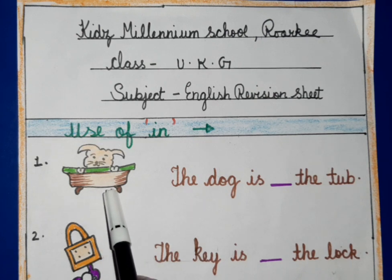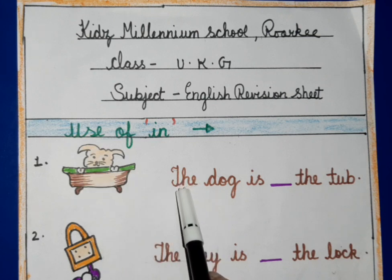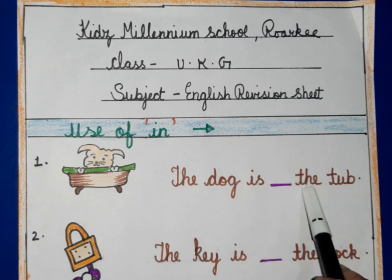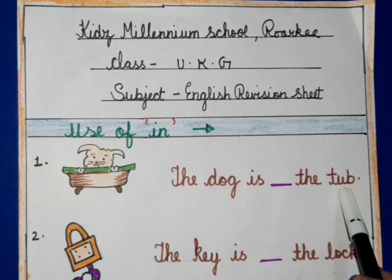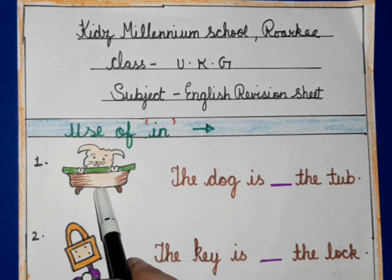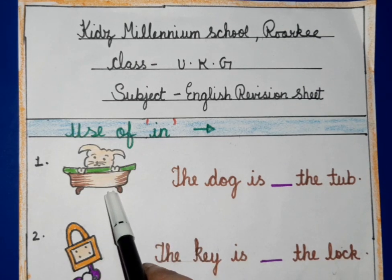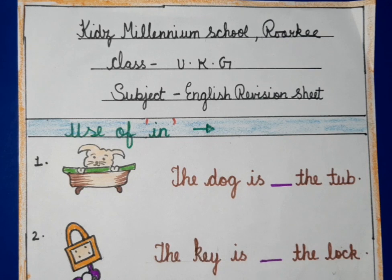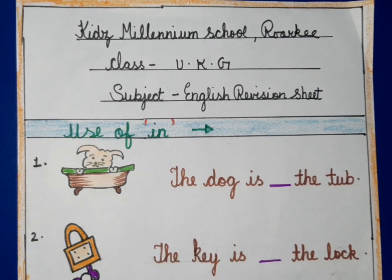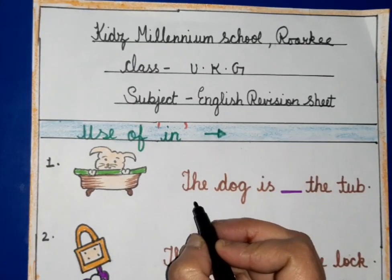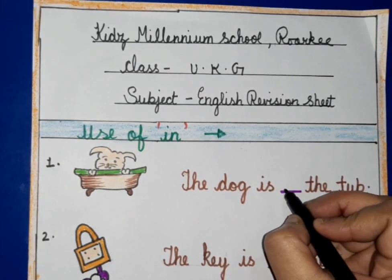My dear kids, as you can see a picture. The dog is in the tub. Dog tub ke andar hai. Is liye ham ne yahaan par 'in' ka use kiya hai. So my dear kids, we will write like this: The dog is in the tub.